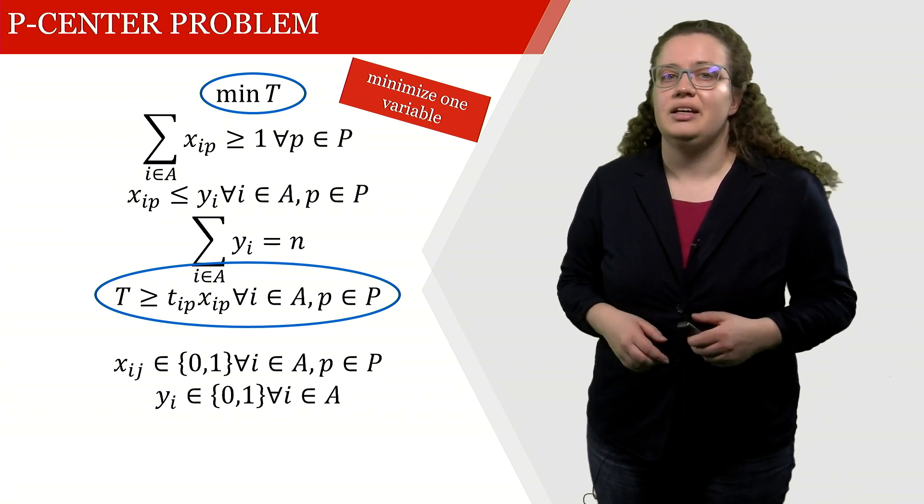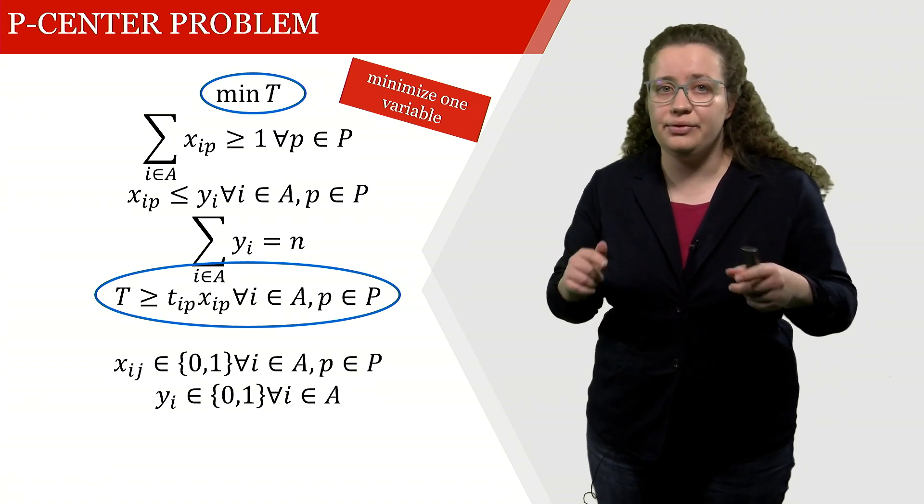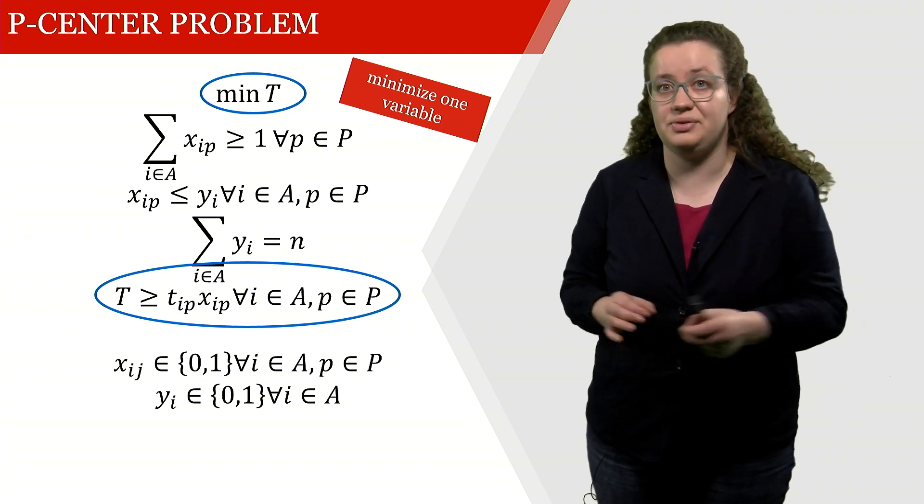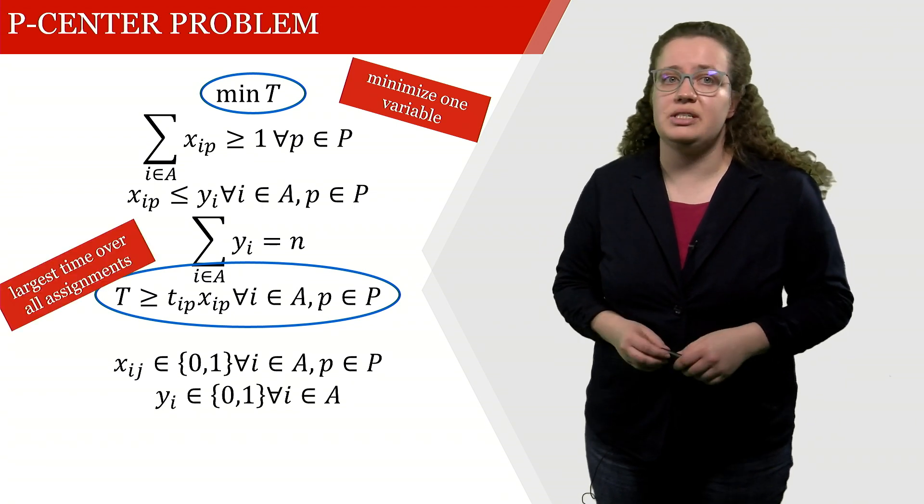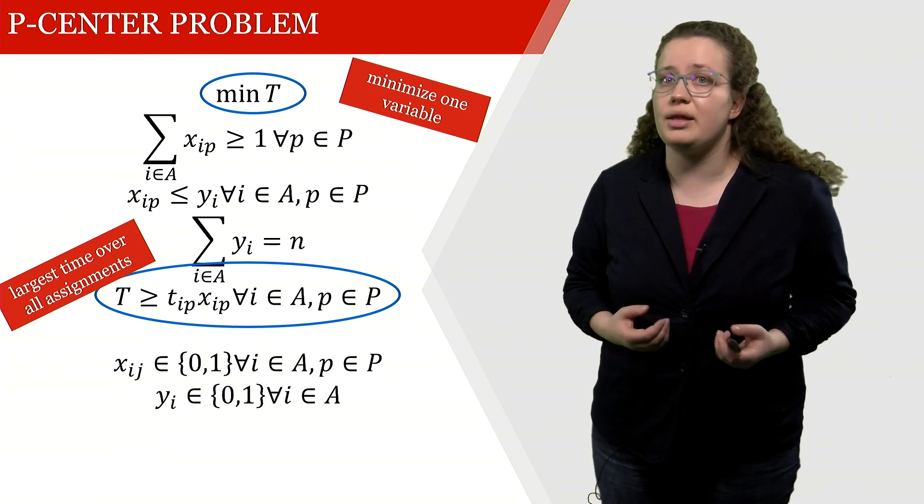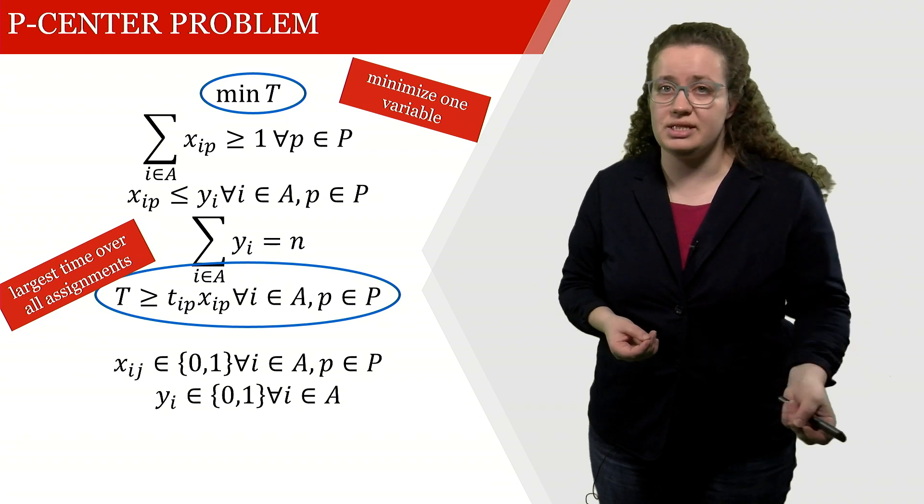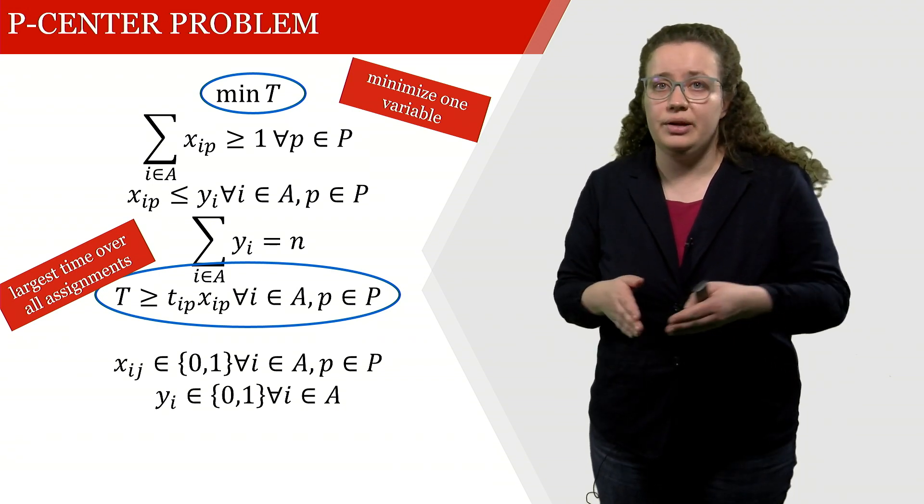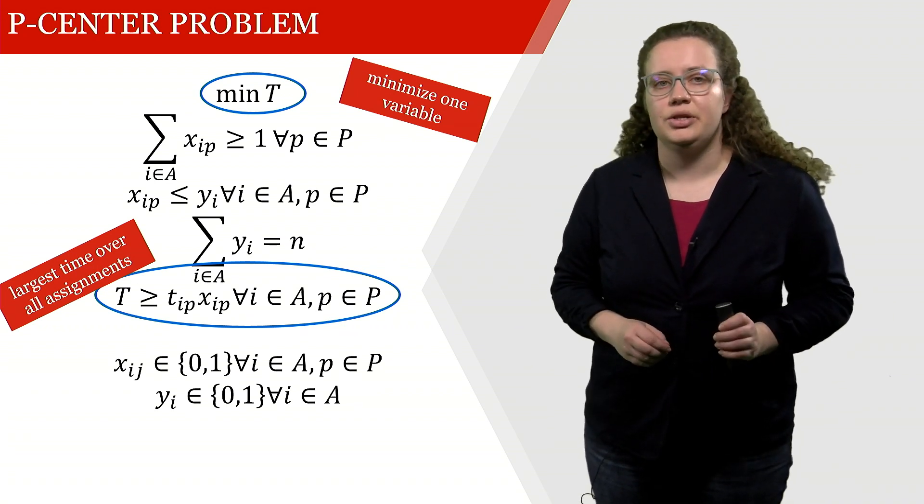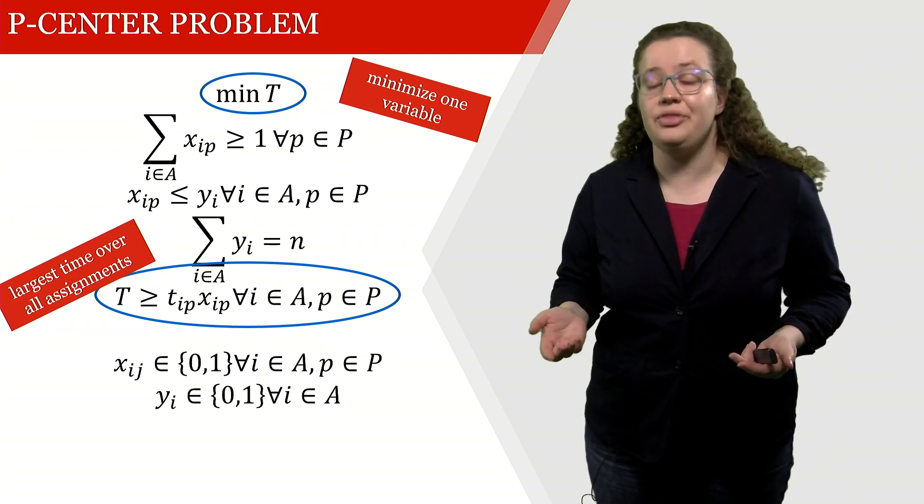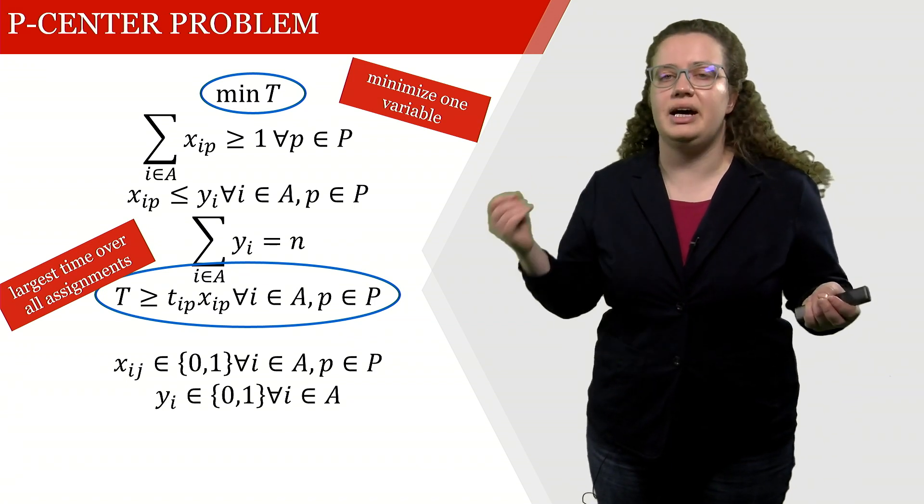So t is at least the travel time between ambulance station and patient if this station is being, if there's a flow between these two. And from this we detect that we're looking for the largest time overall assignments. So if we're assigning this patient to this ambulance station then we're considering the distance between these two and this is what we're minimizing. So we figured out that we're minimizing the maximum duration between a patient and an ambulance station.